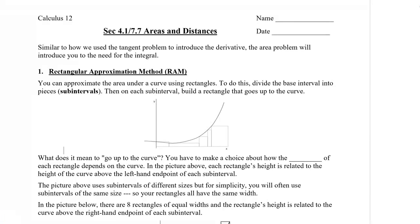So we have this curve, and we're going to build up rectangles, which means I need to choose the height. Each rectangle's height in this diagram is related to the left-hand endpoint of each subinterval. I go up to the curve on the left and then build my rectangle down. The picture above uses subintervals of different sizes, but for simplicity you will often use subintervals of the same size, so they will have the same width.